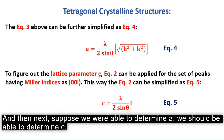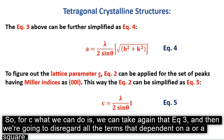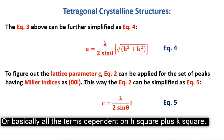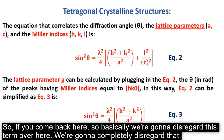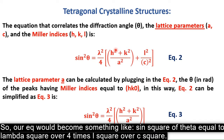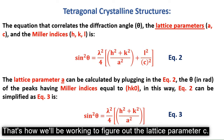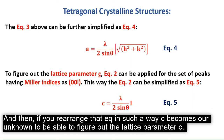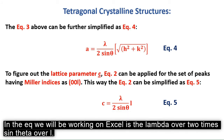Supposing we have determined a, we can then determine c. For c, we take equation 2 and disregard all terms dependent on a² — essentially dropping the (H² + K²)/a² term entirely. The equation becomes sin²(θ) = (λ²/4) × (L²/c²). Rearranging so c is the unknown gives equation 5: c = (λ / (2 × sin(θ))) × L. This is the equation we'll use in Excel to calculate the lattice parameter c.